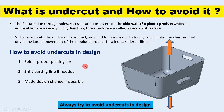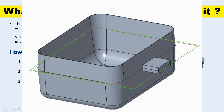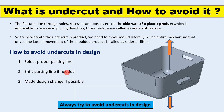How can we avoid undercut features in the design? We need to properly select the parting line, as proper selection of the parting line plays a very important role. Second, we need to shift the parting line. As you can see here, for this extruded rectangular portion, if you place the parting line in the middle of that portion, it will not be an undercut. We can draw the parting line at the middle of the rectangular portion, and after that it will go up and downward.